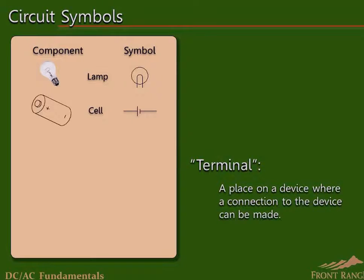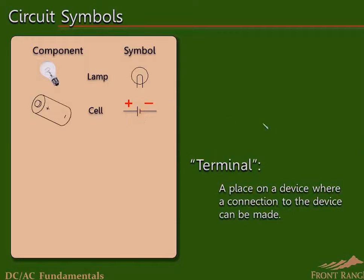Strictly speaking, the symbol for a single cell is the one shown here, with one long and one short line. However, it is common practice to represent any battery, regardless of the number of cells it contains, with only two cells drawn. Batteries are marked with a positive terminal and a negative terminal. On the battery symbol, the positive terminal is indicated by the longer line and the negative terminal by the shorter line. The plus and minus signs are not usually drawn on the circuit, so you must learn to recognize which is which by looking at the symbol.